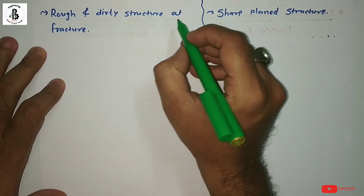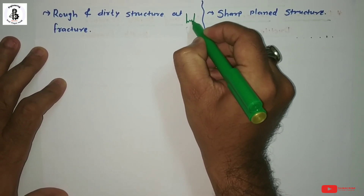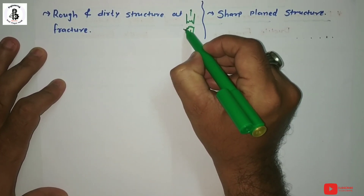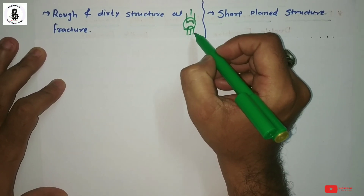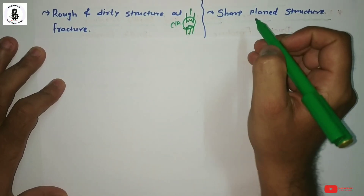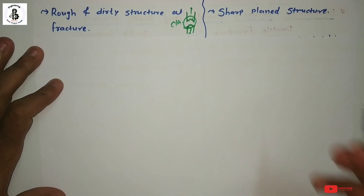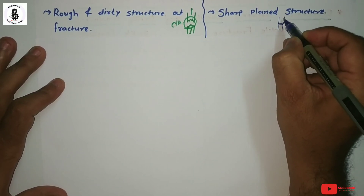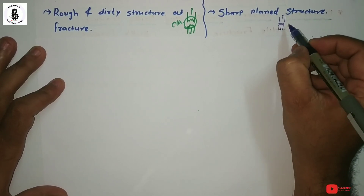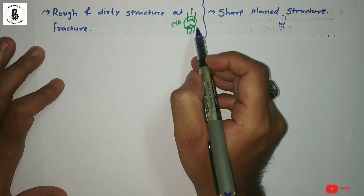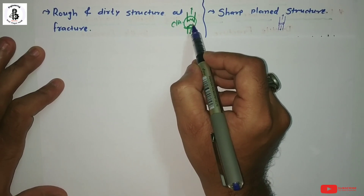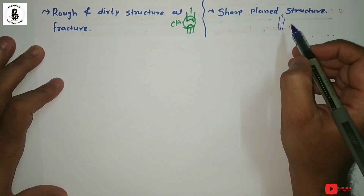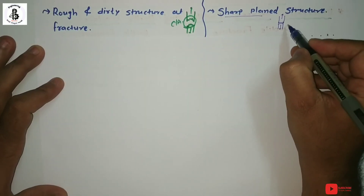In ductile fracture, if you observe the cross-sectional area, you find a rough and dirty structure at the fracture surface. The component fails and forms a rough and dirty cross-sectional area. But in brittle fracture, it forms sharp edges — if you join both fracture surfaces, they will have the same dimensions, whereas in ductile fracture joining the two pieces shows elongation.